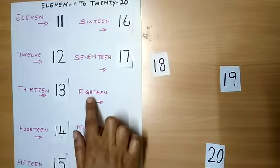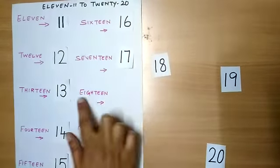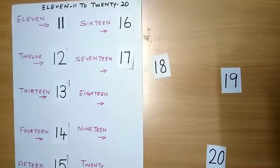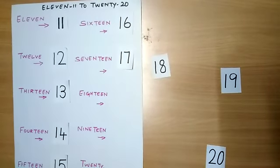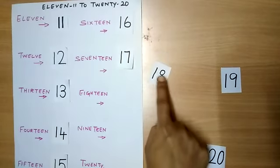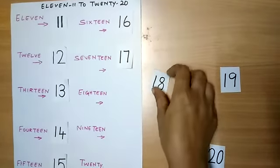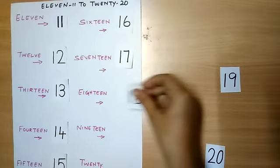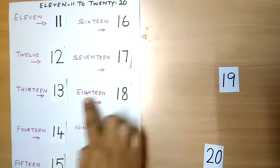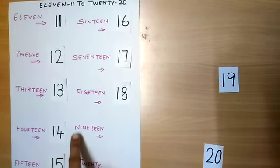18. Where is number 18? This is number 18. 1 and 8 makes number 18. So let me arrange number 18 to number name 18.